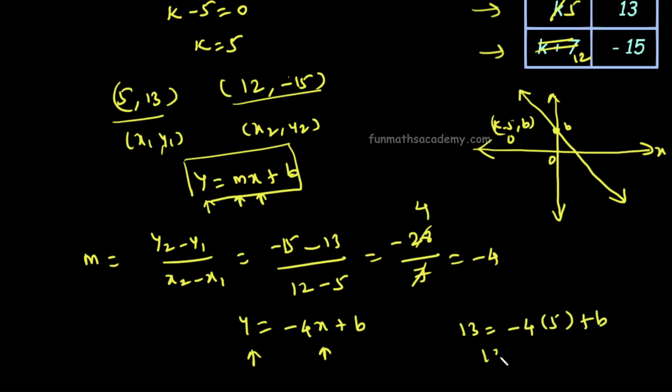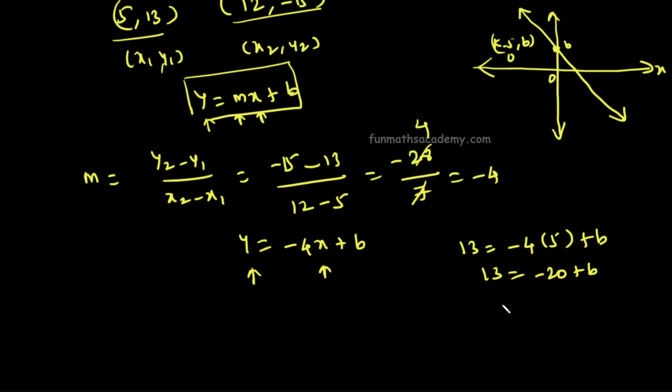So 13 equals minus 4 into 5, which is minus 20, plus b. Moving minus 20 to the other side, 13 plus 20 equals b. So b value is 33.